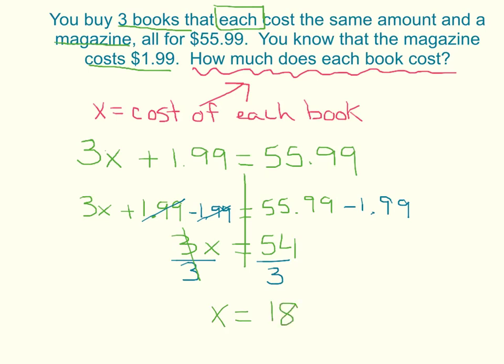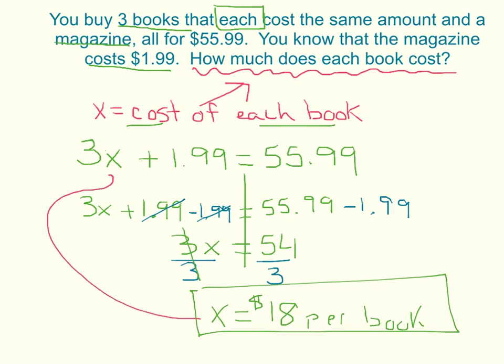So x equals 18. But let's think about what we just solved for. The cost of each book. So that is $18 per book. And you can go back and check to see if this makes sense by plugging it into your equation. Is three times 18 plus the magazine, which is $1.99, equal to $55.99? And it should work.